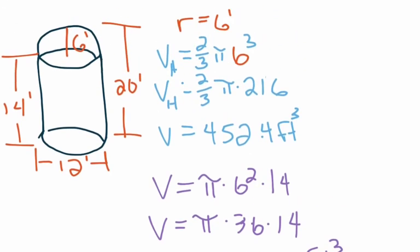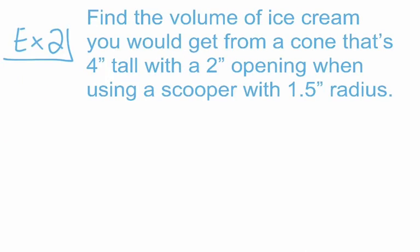We got that by finding the volume of the cylinder, finding the volume of the hemisphere, and adding them together. For our second example, we're told to find the volume of ice cream from a cone that's 4 inches tall with a 2-inch opening, using a scooper that has a 1.5-inch radius.